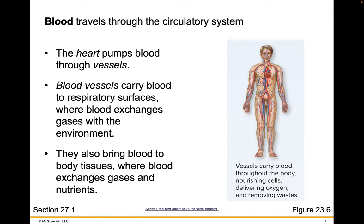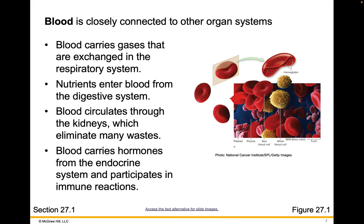Blood vessels also bring blood to body tissues, where blood exchanges gases and nutrients. Blood is closely connected to other organ systems as well — it carries the gases exchanged in the respiratory system, nutrients enter the blood from the digestive system, blood circulates through the kidneys to eliminate wastes, and it also carries hormones from the endocrine system and participates in immune response.